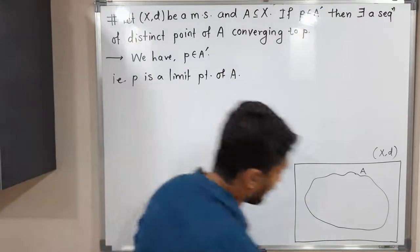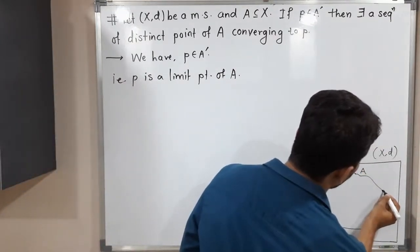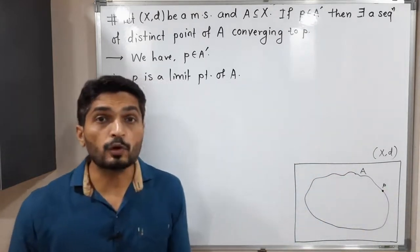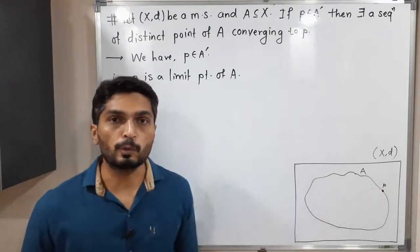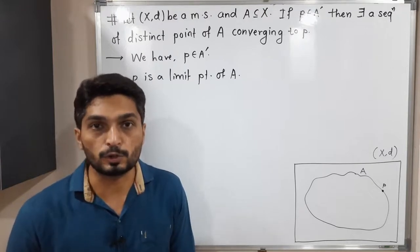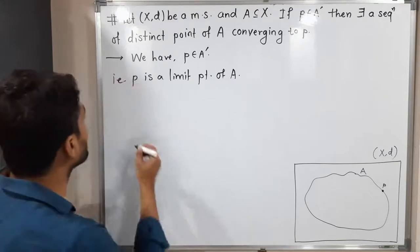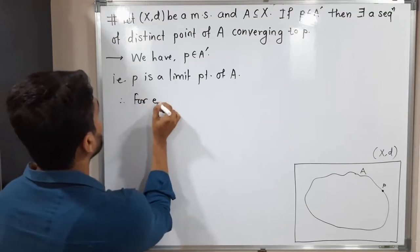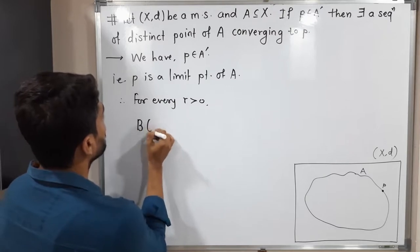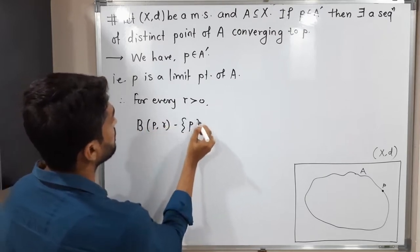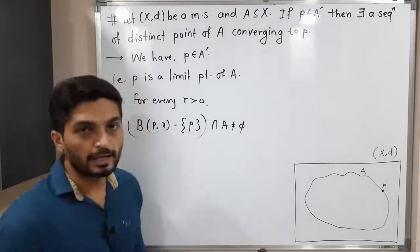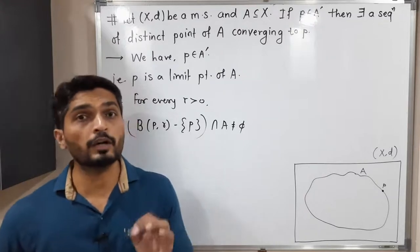Let me show it here in a diagram. Suppose we have this point p which is a limit point of A, and we have to find a sequence of distinct points of A converging to p. We start with the definition of limit point: for every r greater than 0, B(p,r) minus the singleton {p}, intersected with A, is not equal to the empty set.